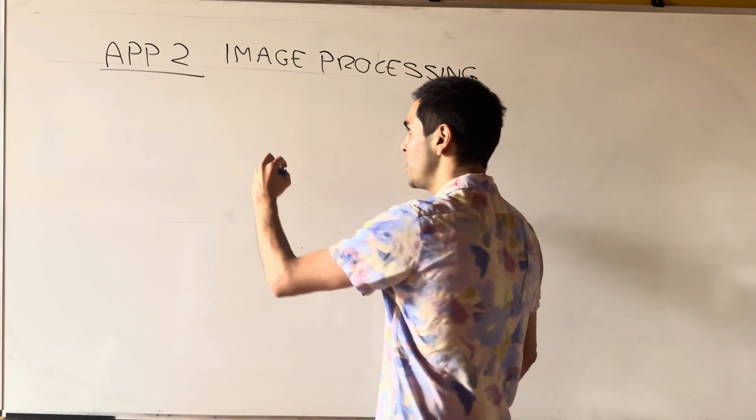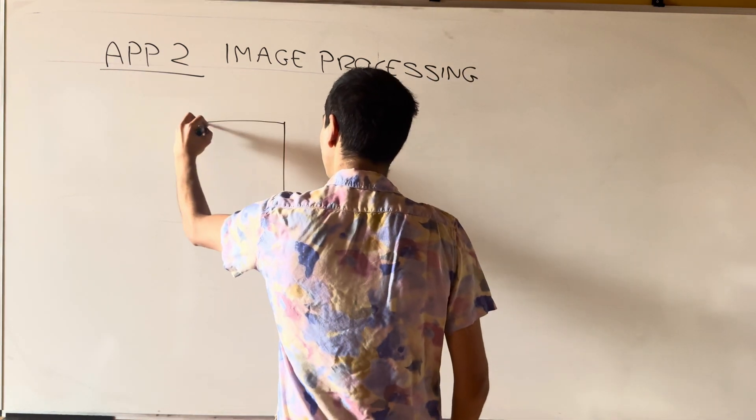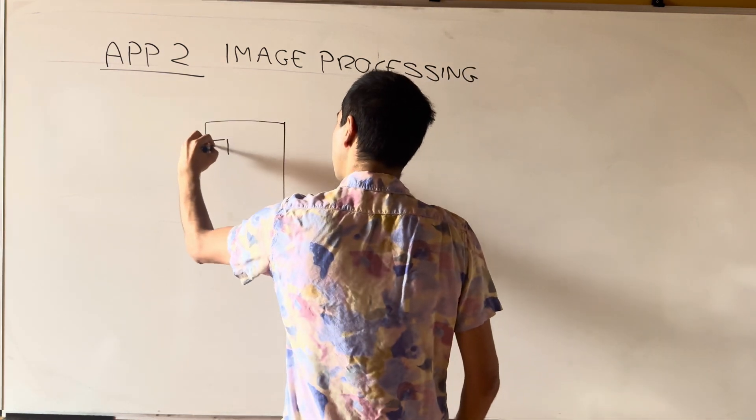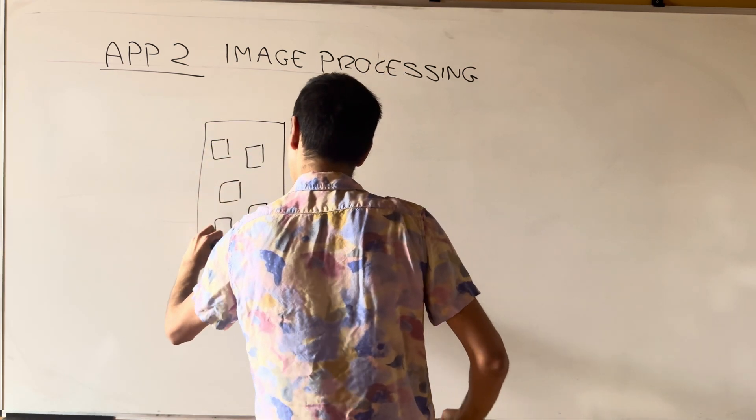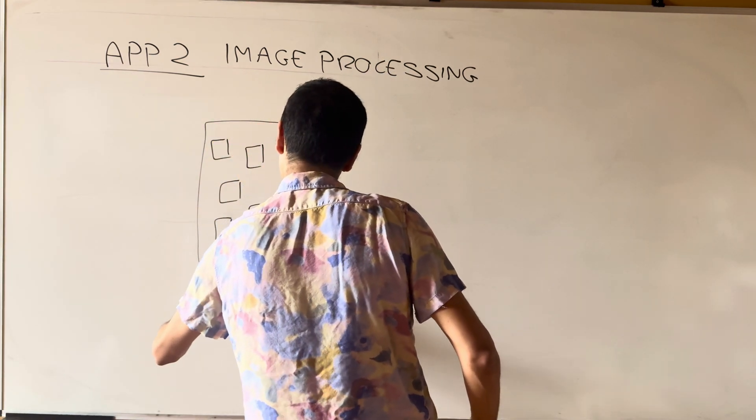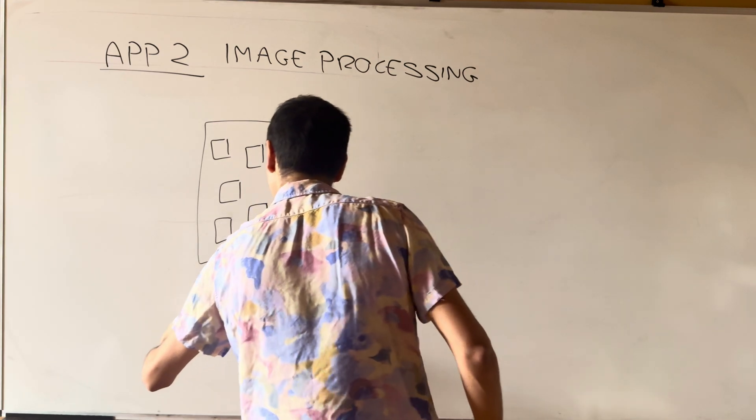The second application is image processing because Laplace's equation literally helps make blurry pictures much, much, much clearer. So the situation is as follows. Suppose you start with a picture that's very blurry or pixelated.